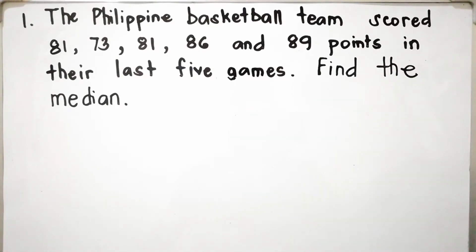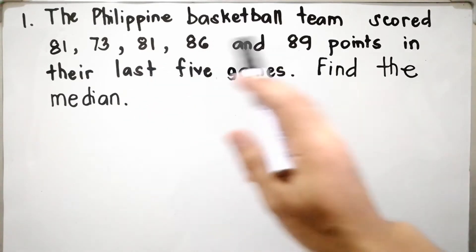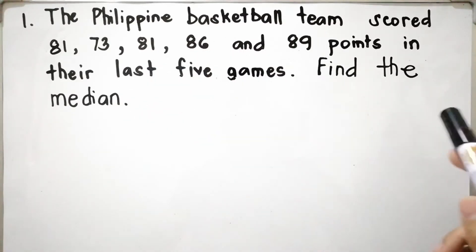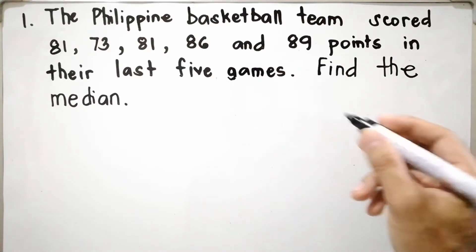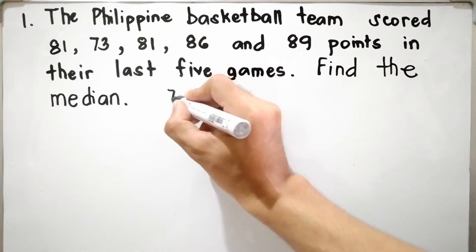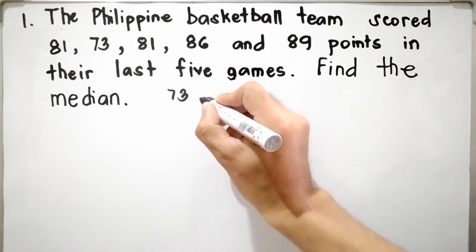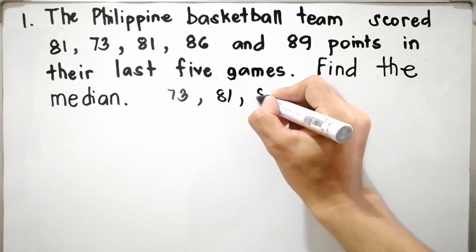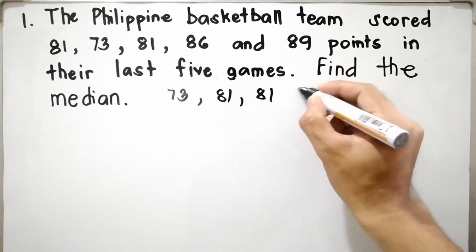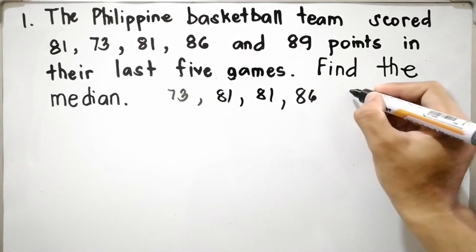In computing the median, the first step is to arrange the scores in ascending or descending order. Ascending order is from least to greatest. So let us start with 73, then 81, another 81, then 86, then 89.